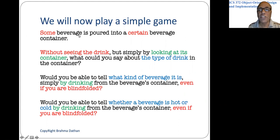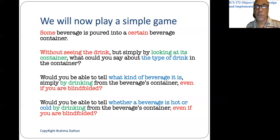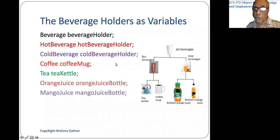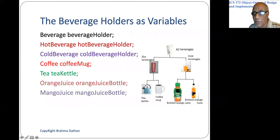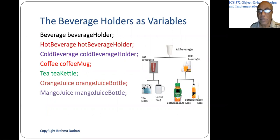Let's imagine this game: some beverage is poured into a certain beverage container. Without seeing the drink, imagine any one of those different types of containers. Assume that some drink is poured into one of those containers, and we are not breaking the rules — we are not going to put inappropriate drinks in the wrong container. Without seeing the drink, but simply by looking at its container, what could you say about the type of drink? In some cases you can predict it accurately, in some cases you cannot.